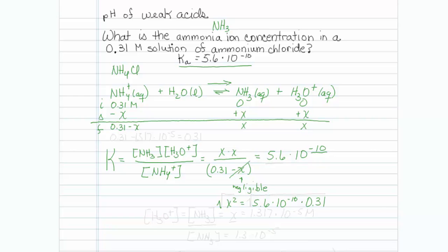If I'd like to solve for x, I can take the square root of both sides and I wind up with x equal to 1.317 times 10 to the minus fifth molar. x is used to represent my ammonia concentration and also my hydronium concentration.